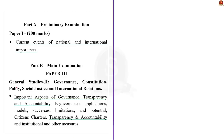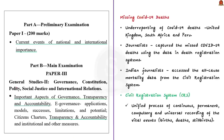The syllabus covered by this article is highlighted below. The problem of under-reporting of COVID-19 deaths is not just confined to India — countries like the United Kingdom, South Africa, and Peru faced the same issue, but found ways to overcome it. Journalists in those countries captured missed COVID-19 deaths using data available in their death registration systems. Indian journalists are also doing the same, accessing all-cause mortality data from the Civil Registration System, known as the CRS.